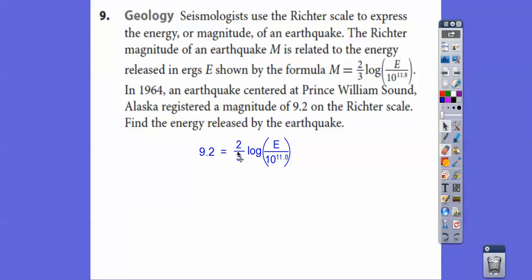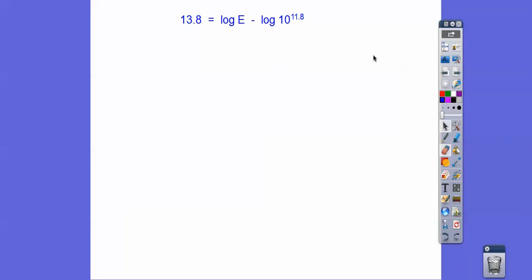To get rid of this two-thirds, I'm going to multiply both sides by three-halves. So 9.2 times 3 over 2 gets me 13.8. Then we're going to use our logarithm property. When we have a division, we can separate it into separate logs as the log of this minus the log of this. This is base 10, so if these numbers match up, it's just that exponent, 11.8. Here's log of E. Add 11.8 over there, you get 25.6. This base 10 to this power equals E.